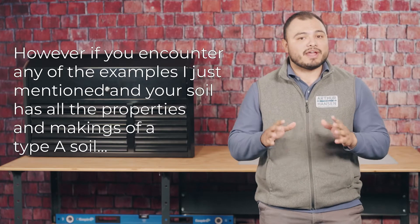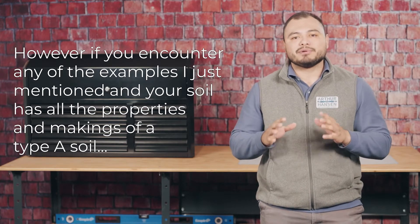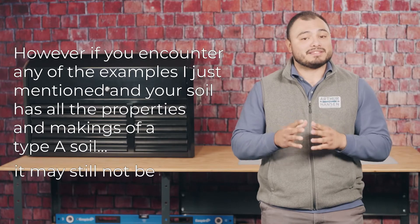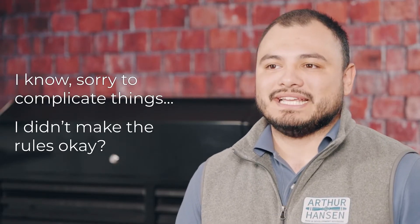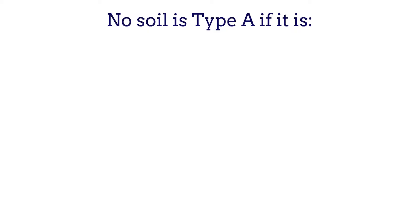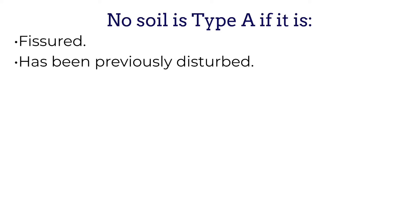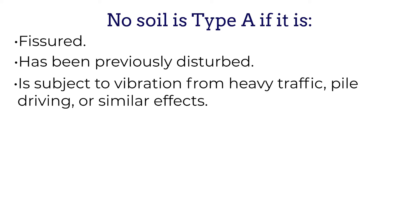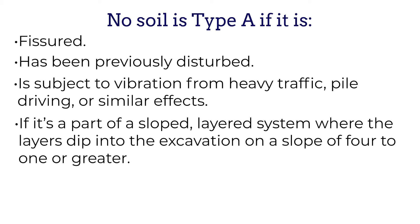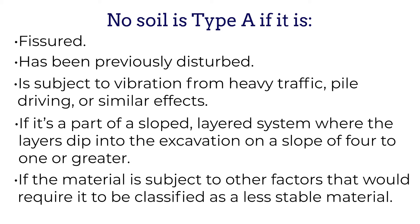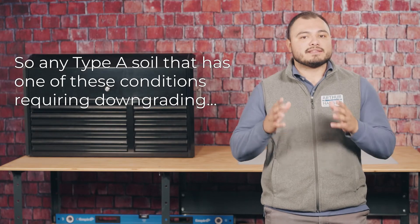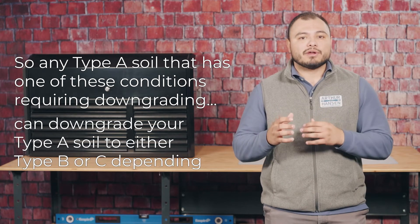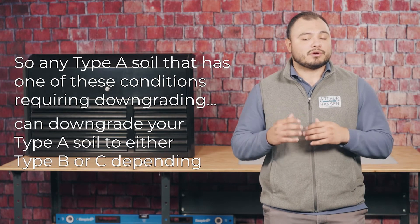However, if you encounter any of those examples and your soil has all the properties and makings of a type A soil, it may still not be. No soil is type A if it is fissured, has been previously disturbed, is subject to vibration from heavy traffic, power driving, or similar effects, or if it's part of a sloped layer system where the layers dip into the excavation on a slope of 4 to 1 or greater, or if the material is subject to other factors requiring it to be classified as less stable. Any one of these conditions can downgrade your type A soil to either type B or type C, depending.